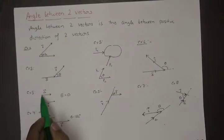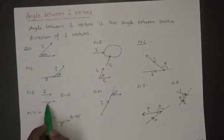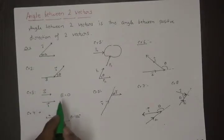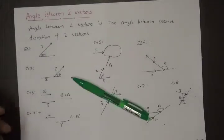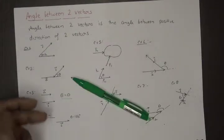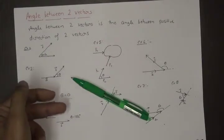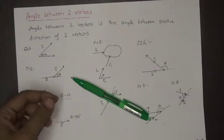Next example: these are the two vectors A and B, which are parallel to each other. What is the angle between them? The answer is the angle between them is equal to zero degrees, because the positive directions of the two vectors make an angle of zero degrees with each other.